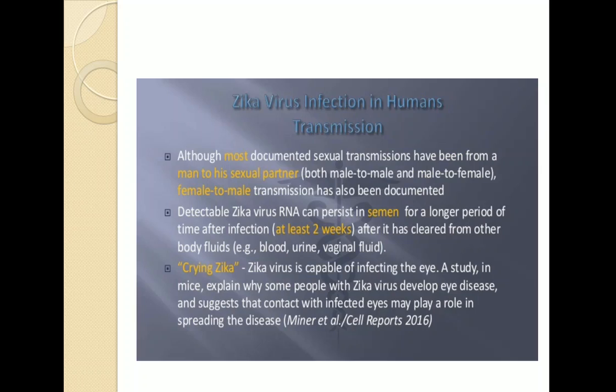Although most documented transmission is through intercourse, the virus is detectable in semen and can remain there for at least two weeks. Zika is an RNA virus and is capable of infecting the eyes — a condition called ocular Zika.